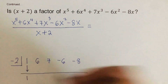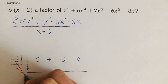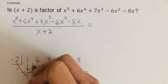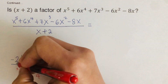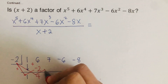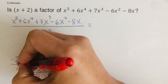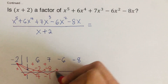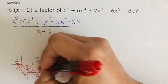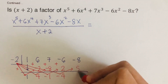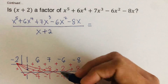Multiply negative 2 times 1 to get negative 2; write it down and add: 6 plus negative 2 is 4. Multiply negative 2 times 4 to get negative 8; add: 7 plus negative 8 is negative 1. Multiply negative 2 times negative 1 to get positive 2; add: negative 6 plus 2 is negative 4. Multiply negative 2 times negative 4 to get positive 8; add: negative 8 plus 8 is zero. The remainder is 0.